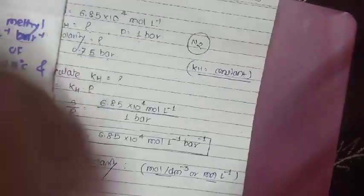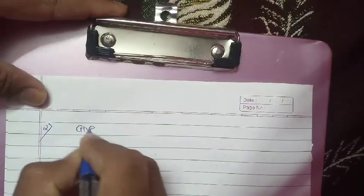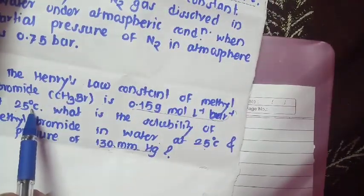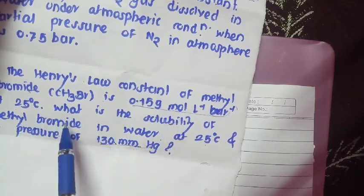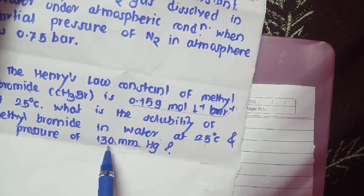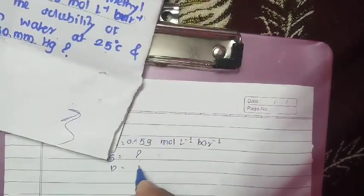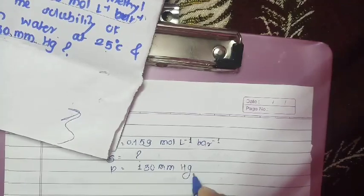Before calculating, write the given data. KH for methyl bromide is given. We have to find solubility S. Pressure P is given as 130 mm of Hg. We need to convert this pressure from mm of mercury into bar to match the units of KH.